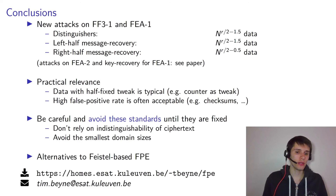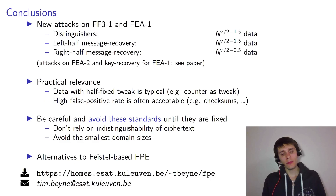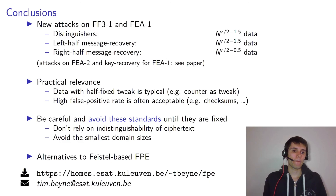I would avoid these standards until they are fixed. Prefer FF1 over FF3 and FEA. In particular, do not rely on the ciphertext looking indistinguishable from uniform random, and avoid the smallest domain sizes because that's where the attacks are most practical. NIST already had a requirement of a minimum domain size of 1 million, but with these attacks it's clear that this is no longer sufficient — you'd have to actually square that if you don't fix the tweak schedule. So that's a real problem.